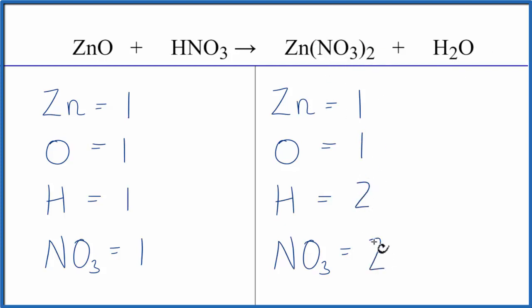So I could put a two here. You can see how this simplifies everything because now I can see I just need to double the H and the nitrate on the reactant side, and I'll have it balanced.